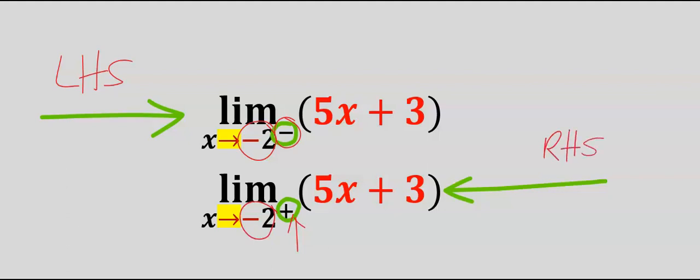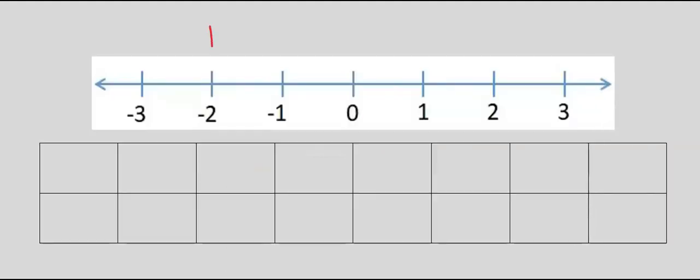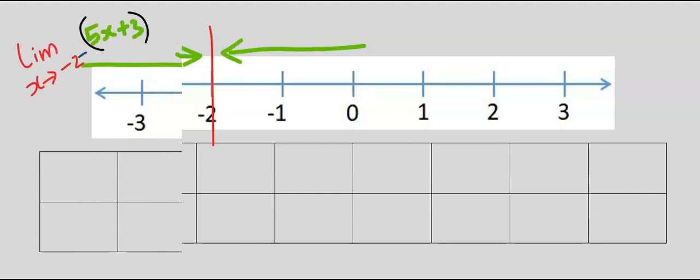The first step is to consider the number line and also draw a table like this. Next, consider the minus two. This is minus two. Next, we are going to approach the minus two from the left-hand side and also approach the minus two from the right-hand side.